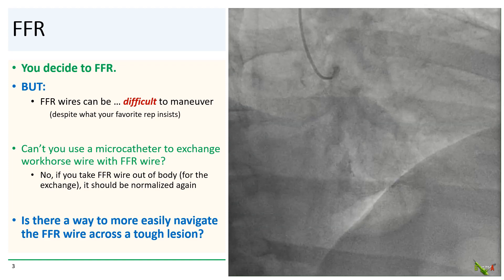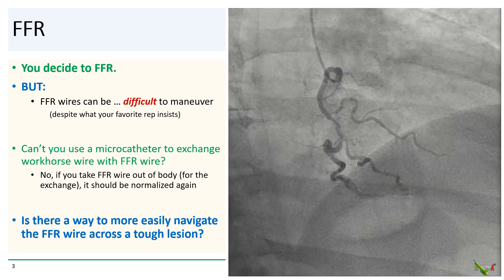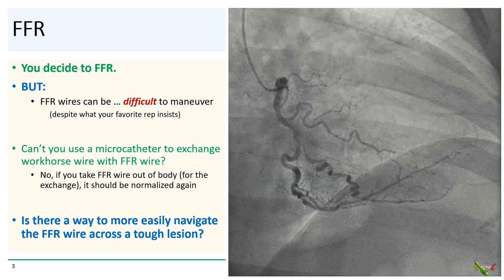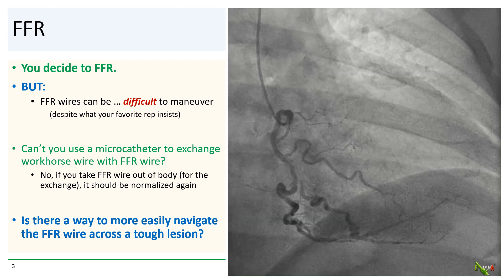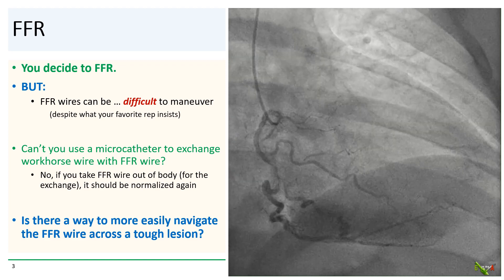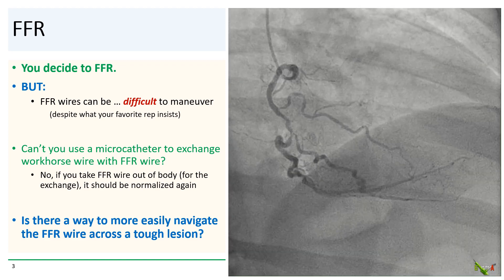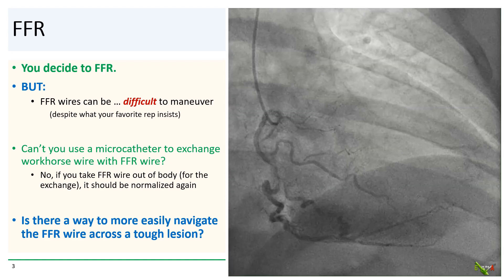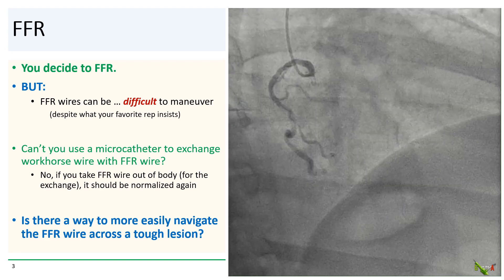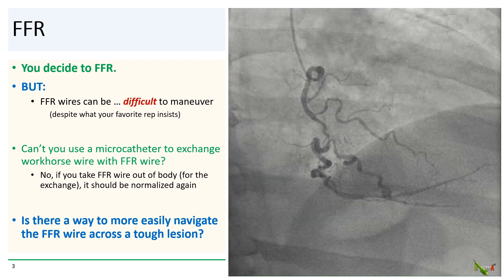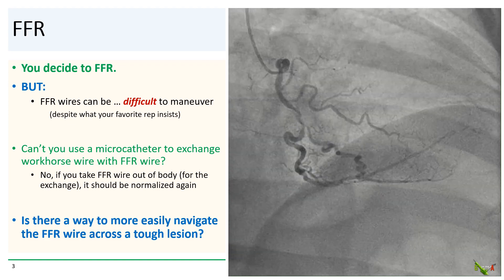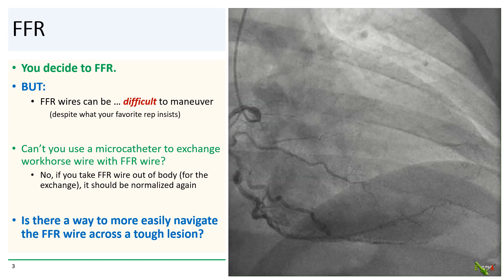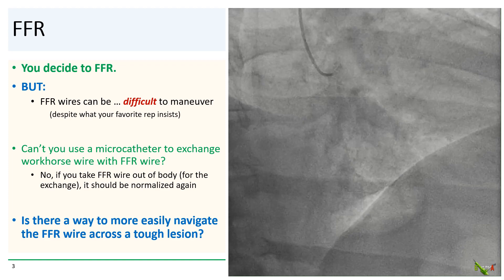This vessel is quite tortuous and probably tricky to wire. And despite what your favorite rep keeps insisting, FFR wires are at best difficult to maneuver. I'm doubtful that any FFR wire could easily get through this vessel. So how are we going to do this?